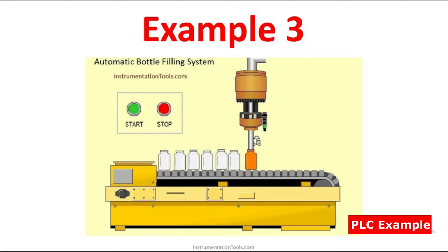What are all the IOs here? We have start and stop — both are inputs. This sensor is another input because it tells us whether the bottle is present or not. So here we are having three inputs. And how many outputs? There are two outputs — one is the conveyor output, to turn on or turn off the conveyor. And the valve opening and closing — this is another output.